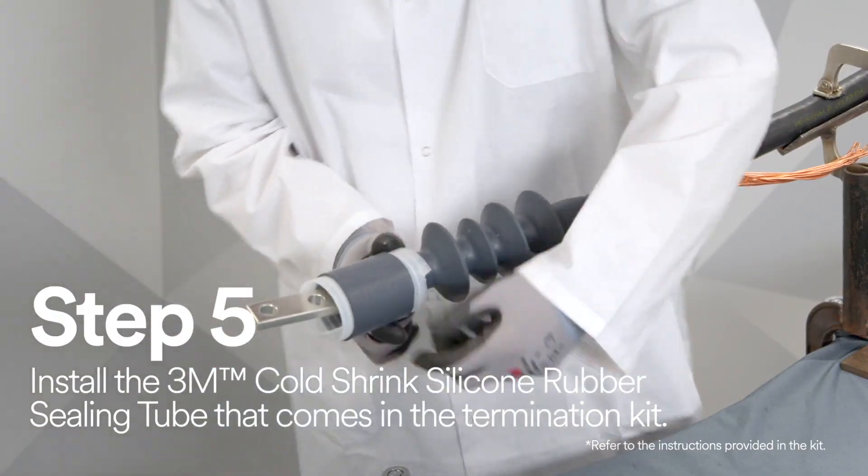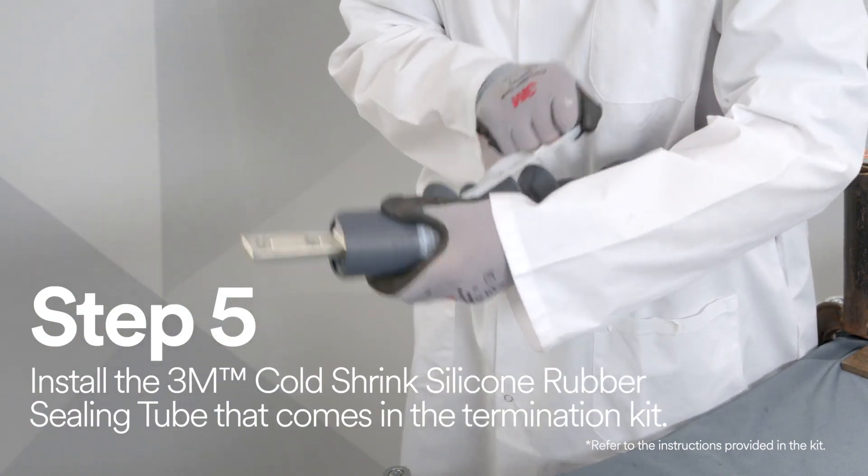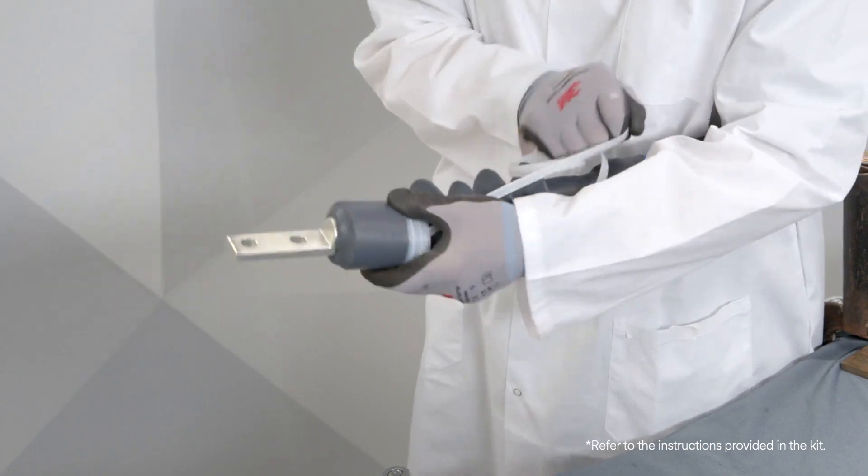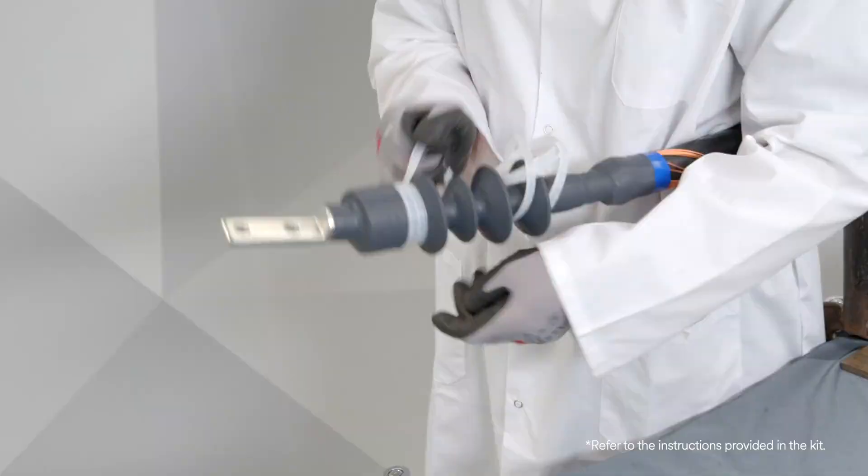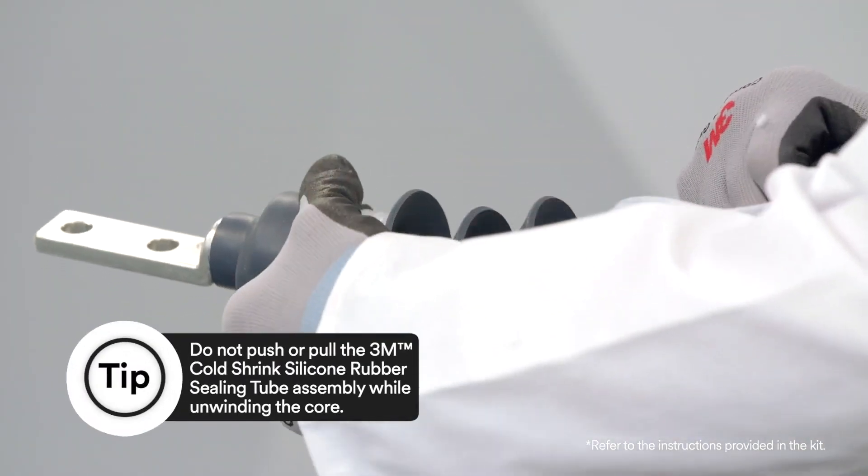Install the 3M cold shrink silicone rubber sealing tube over the foil tape by aligning the edge of the 3M cold shrink silicone rubber sealing tube, not the core, with the lug body edge closest to the connection holes. The loose core end will be facing towards the cable and termination assembly.